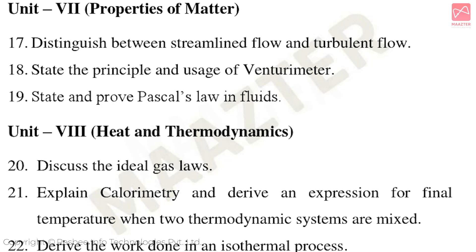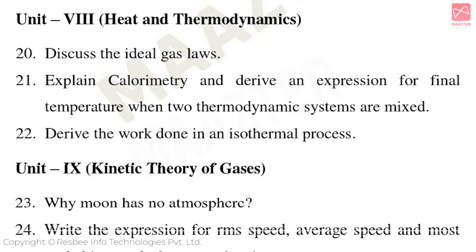Unit 7 Properties of Matter — important three-mark questions: Distinguish between streamlined flow and turbulent flow. State the principle and usage of a Venturi meter. State and Prove Pascal's Law in Fluids. Unit 8 Heat and Thermodynamics: Discuss the ideal gas law. Explain calorimetry and derive an expression for final temperature when two thermodynamic systems are mixed. Derive the work done in an isothermal process.